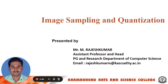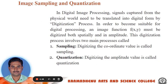Dear students and friends, in this lecture video we will discuss image sampling and quantization. In digital image processing, signals captured from the physical world need to be translated into digital form by a digitization process. In order to become suitable for digital processing, an image function f(x, y) must be digitalized both spatially and in amplitude. This digitization process involves two main processes called sampling and quantization.